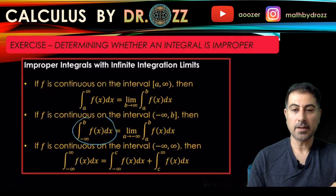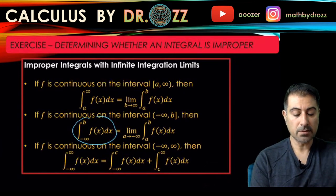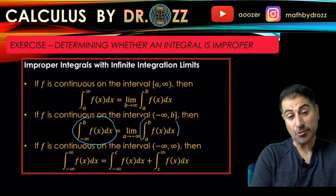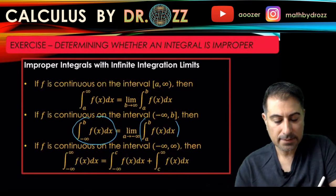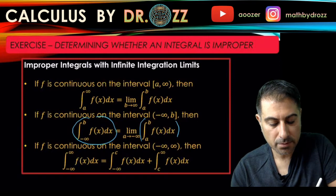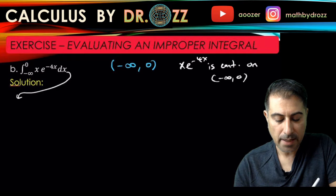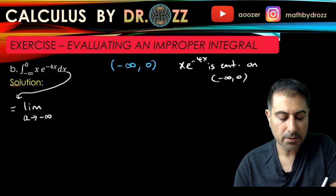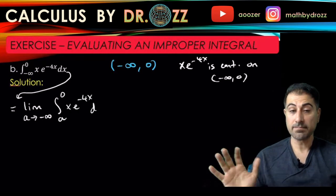We're going to use the standard conversion: let a go to negative infinity. So essentially I'm converting this to a proper integral from a to 0, treating a and 0 as numbers, and then taking the limit as a approaches negative infinity. So we rewrite this as the limit as a → −∞ of the integral from a to 0 of x·e^(−4x) dx.